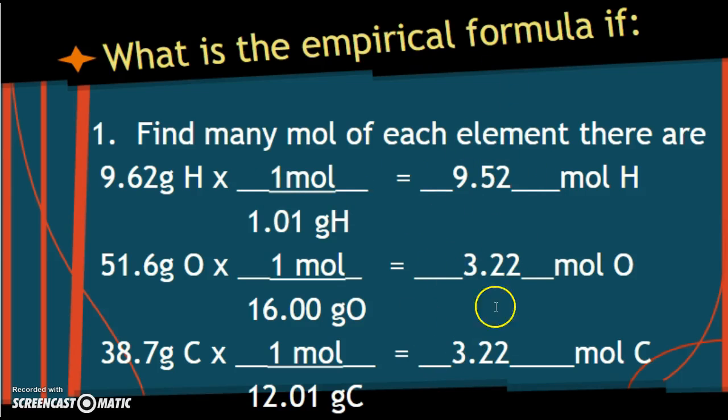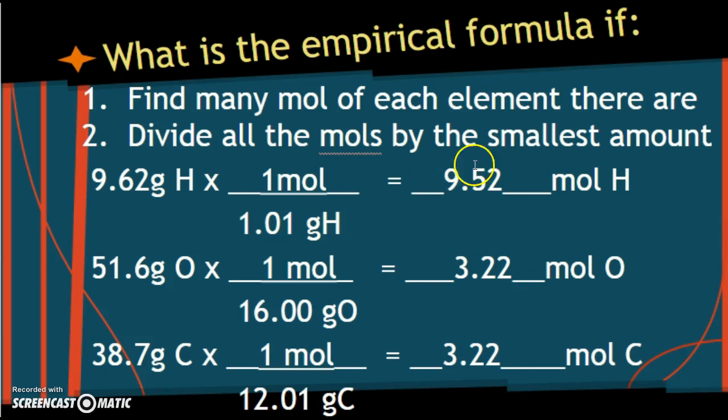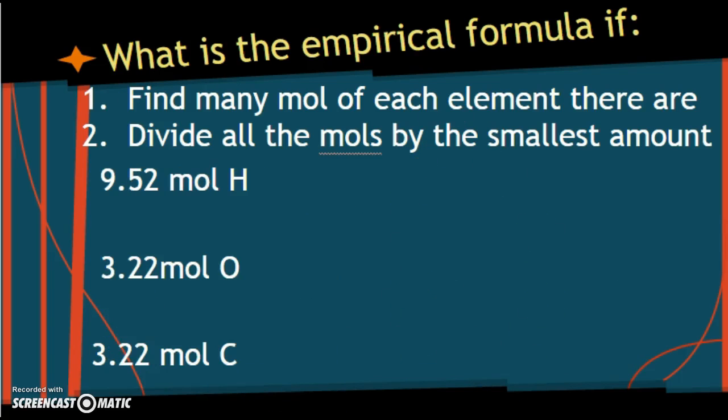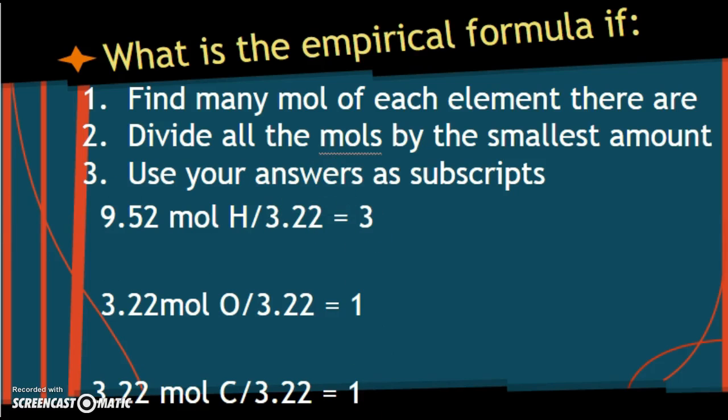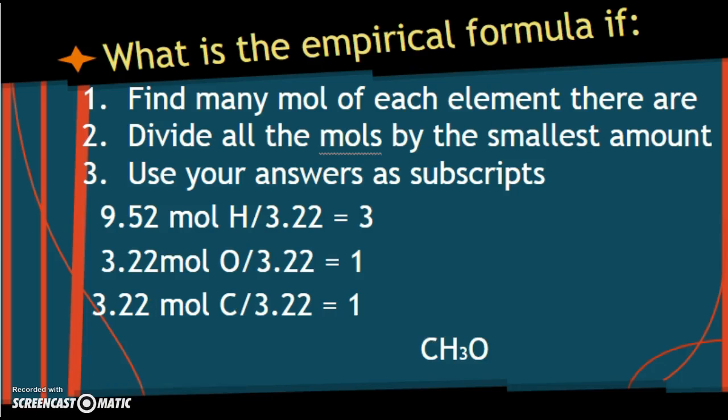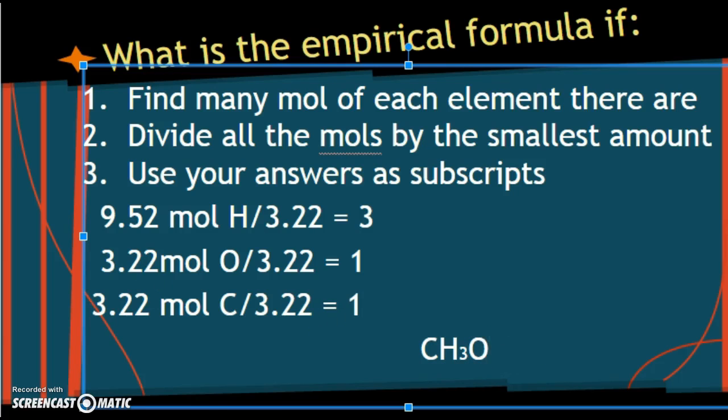So we want to look at this ratio, but these are weird numbers. So do you remember the next step? Divide all the answers by the smallest amount. So we're going to divide all of these by what? So I rewrote them. We're going to divide them all by 3.22, and you get your answers. Now use your answers as subscripts. What do you get for a final answer? You should get CH3O. And if you put them in a different order, I don't care. If you wrote H3OC, I don't care. As long as you have one carbon, three hydrogens, one oxygen, that is all I care about.